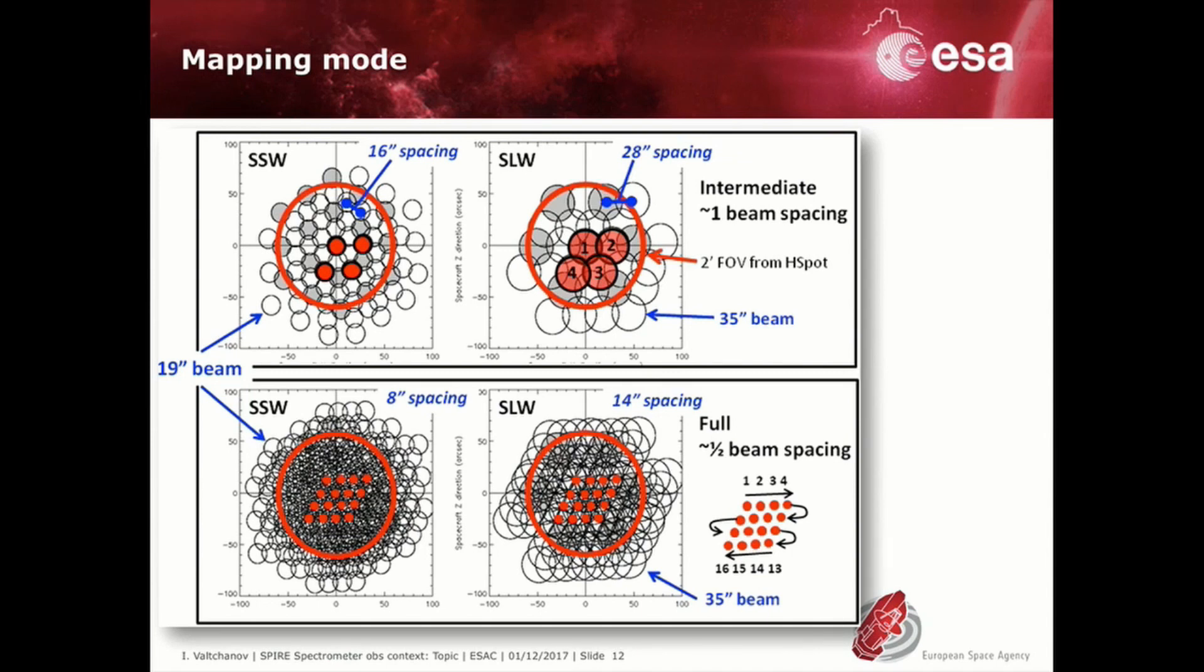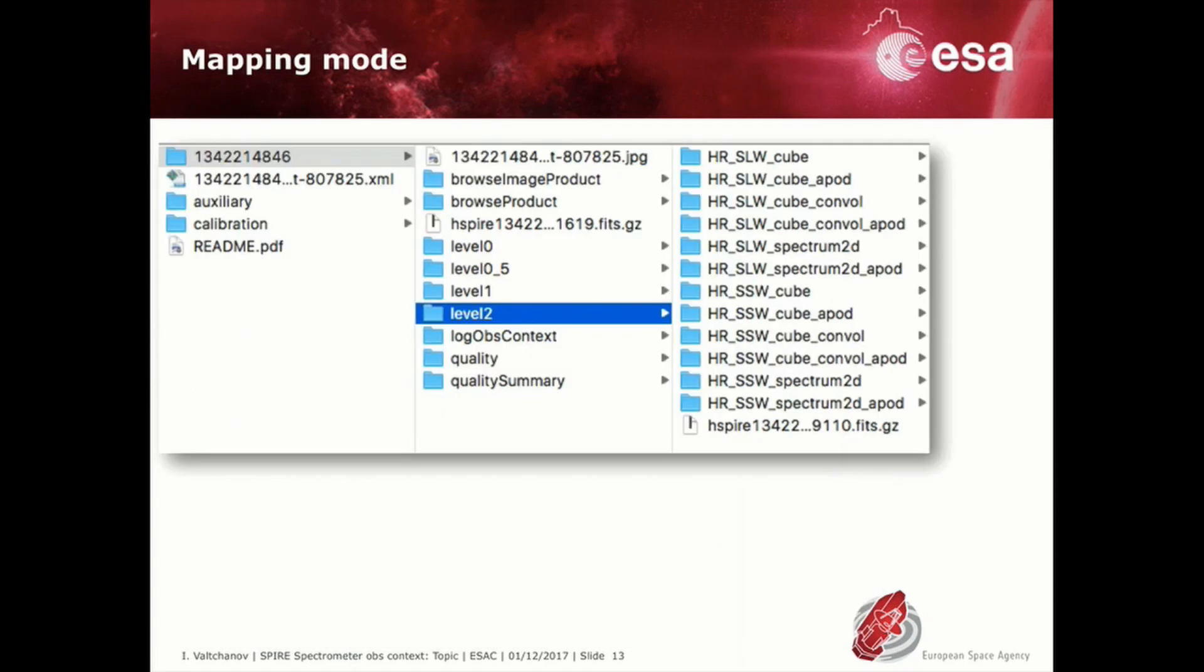The same patterns are repeated for raster mode but over a different set of telescope pointings. The level 2 products contain cubes for each of the two spectral bands SSW and SLW. Cubes produced by two different methods of projection of the individual spectra are also provided naive projection and convolution. Each of these two cubes per band has a version using the apodized spectra for the projection and for completeness. The individual spectra at each of the four or 16 positions are provided as a two-dimensional table products with the words Spectrum2D in the name.